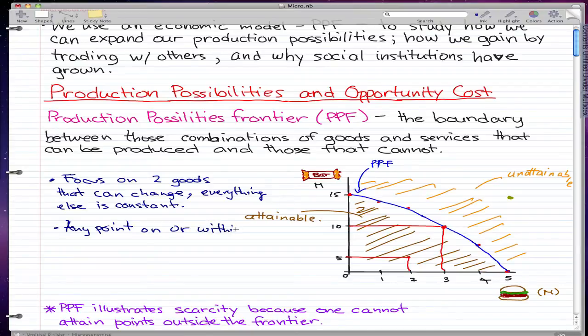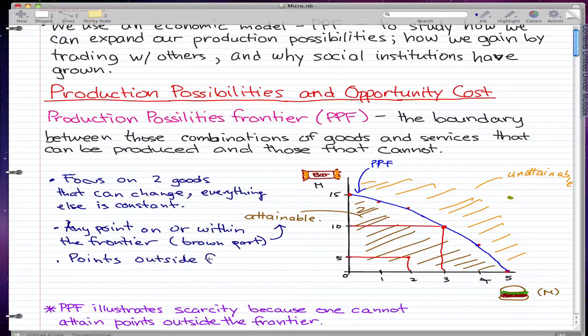Any point on or within the frontier, the brown part, is attainable. Points outside the frontier are unattainable.